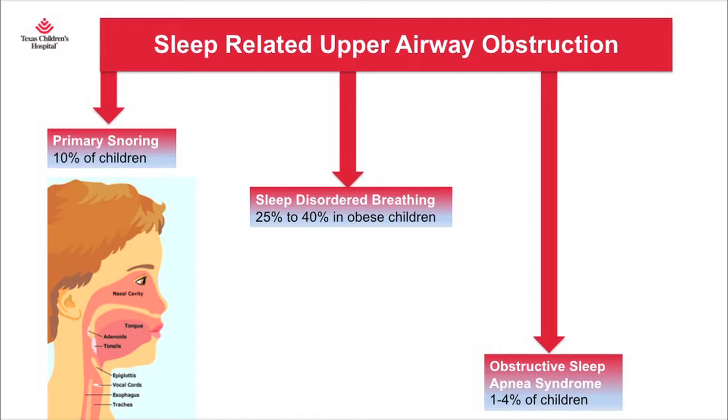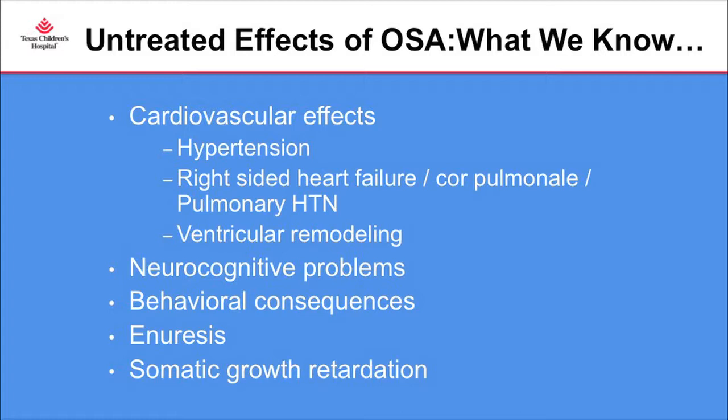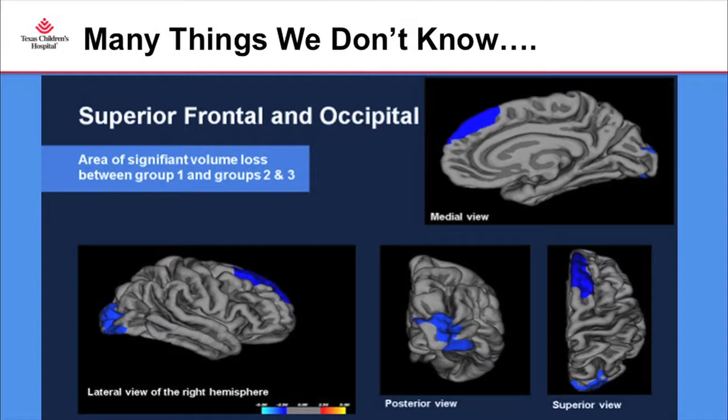If we want to quantify how much sleep obstruction these kids are having, that's when we do a sleep study. The degree of obstructive sleep apnea can be up to 4% in the pediatric population. It's important to treat it because long-term it can cause cardiovascular effects such as hypertension, pulmonary hypertension, neurocognitive disorders, behavioral consequences affecting academic performance, secondary enuresis, and somatic growth retardation.